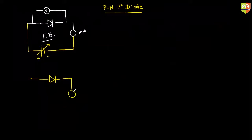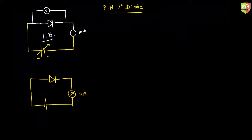In reverse bias, a negligible amount of current flows, so rather than a milliammeter I'll connect a microammeter so that even the slightest current can be measured. This is the reverse bias circuit, and I am connecting a voltmeter across the diode. In reverse bias, there should be almost no current — only a very small amount flows.